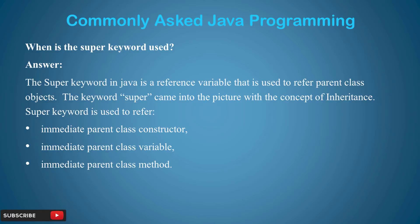When is the super keyword used? In Java, super is a reference variable used to refer to the parent class object. The keyword super came into the picture with the concept of inheritance. You can use the super keyword to access the immediate parent class constructor, immediate parent class variable, and immediate parent class method.